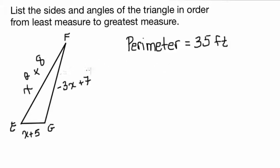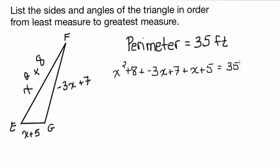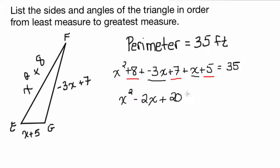So let's start off: x squared plus 8, plus negative 3x plus 7, plus x plus 5, equals 35. Then you just combine like terms. X squared is by itself — there are no other x squared terms. Then we've got negative 3x and a positive x, which gives negative 2x. And then our constants: 8 plus 7 plus 5 equals 20. So that equals 35.